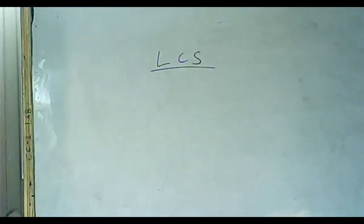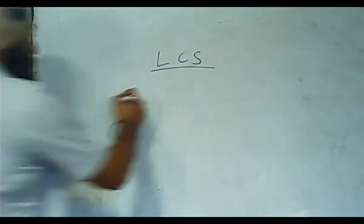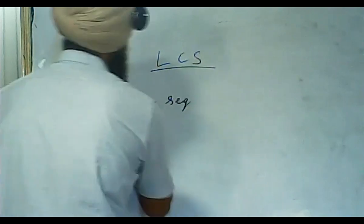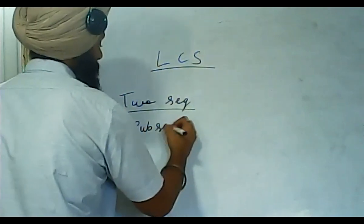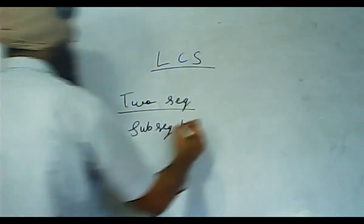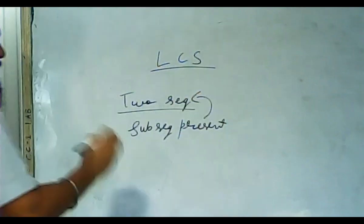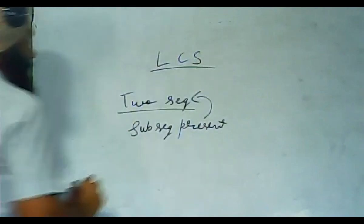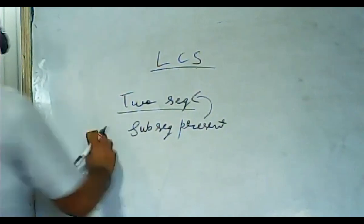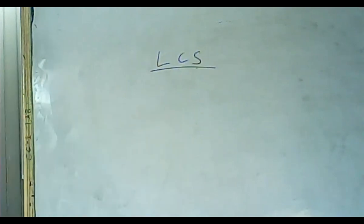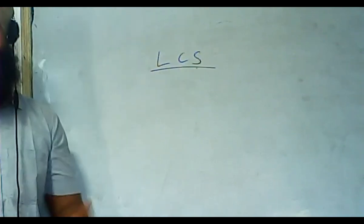What is LCS? If we have two strings given, we need to find the length of the longest sequence present in both of them. So two sequences are given — we need to find the longest subsequence present in both. That is LCS. What is a subsequence? A subsequence is a sequence that appears in the same relative order but not necessarily contiguous — it may or may not be contiguous.